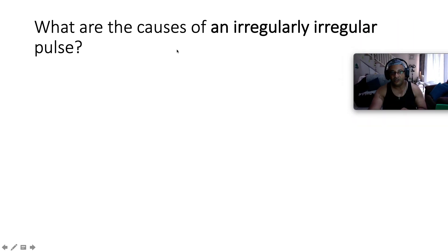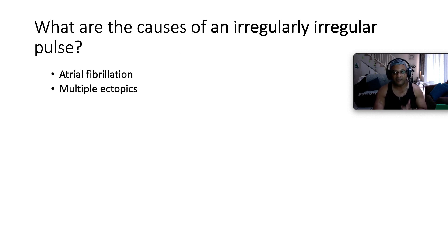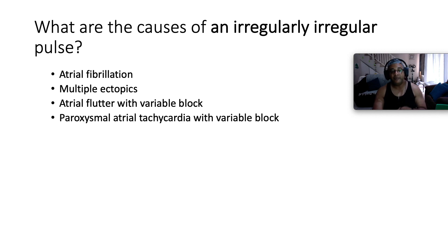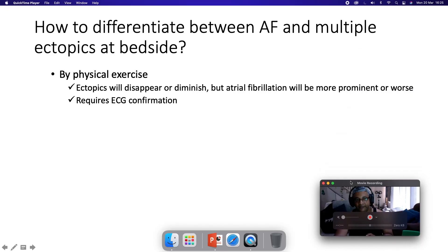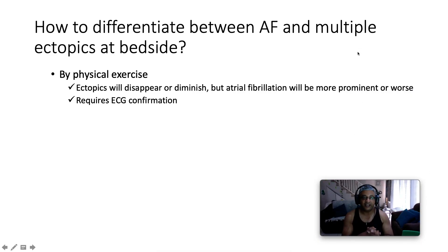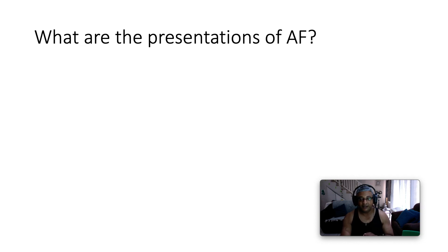What are the causes of an irregularly irregular pulse? It can be atrial fibrillation, multiple ectopics, atrial flutter with variable block, or paroxysmal atrial tachycardia with variable block. But at the bedside, how do we differentiate between atrial fibrillation and multiple ectopics? Both are going to be irregularly irregular. The answer is by physical exercise — ask the patient to do a couple of sit-ups in bed. You'll find that ectopics will disappear or diminish, but atrial fibrillation will actually become more prominent or worsen. You want to confirm this by electrocardiogram.